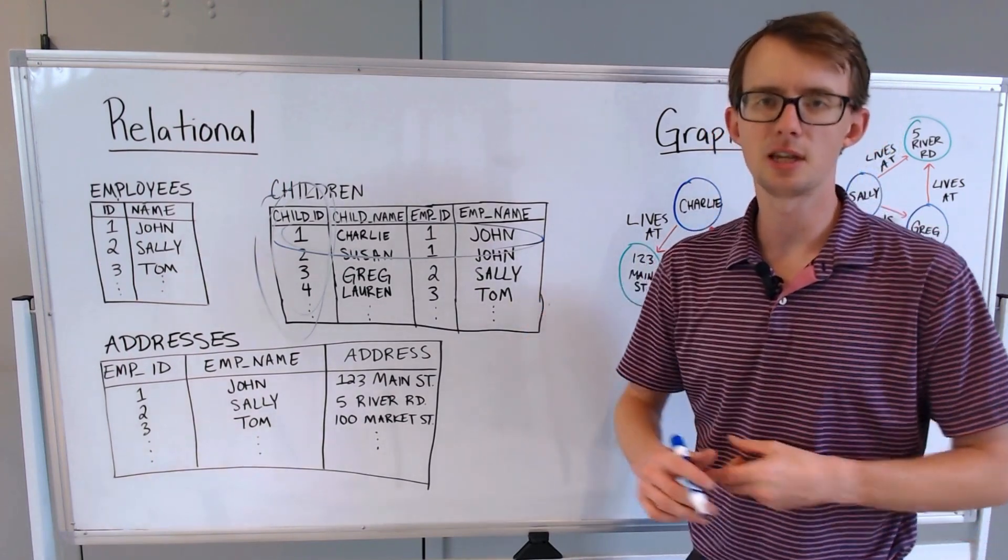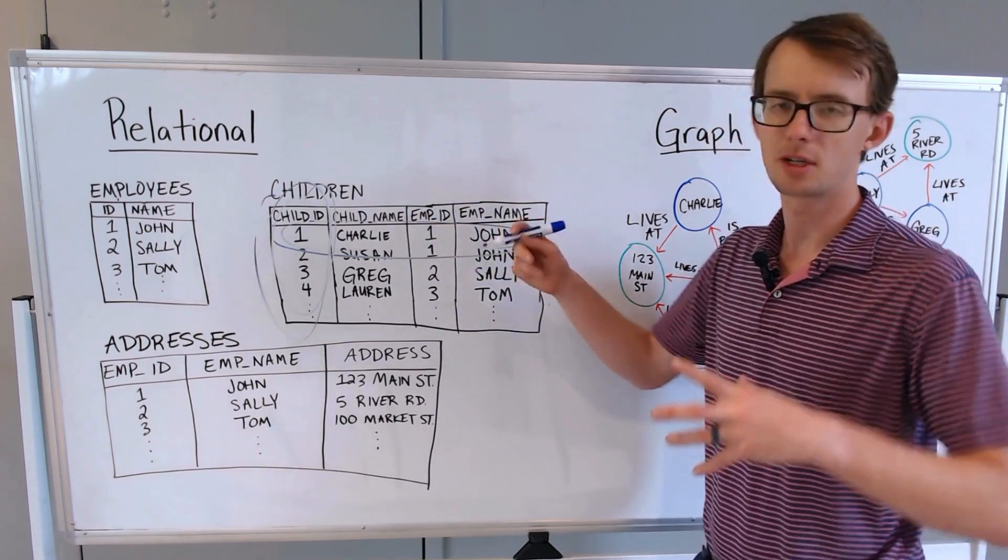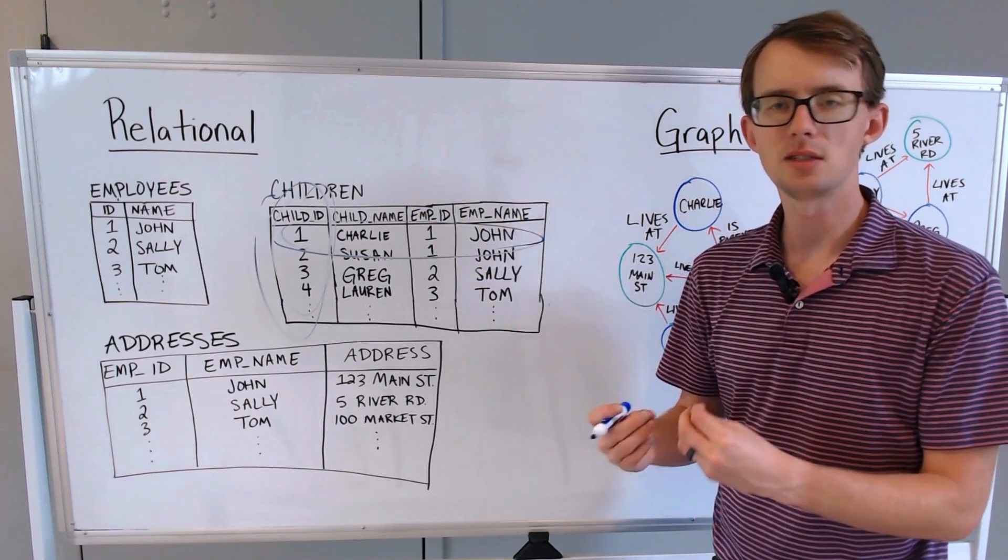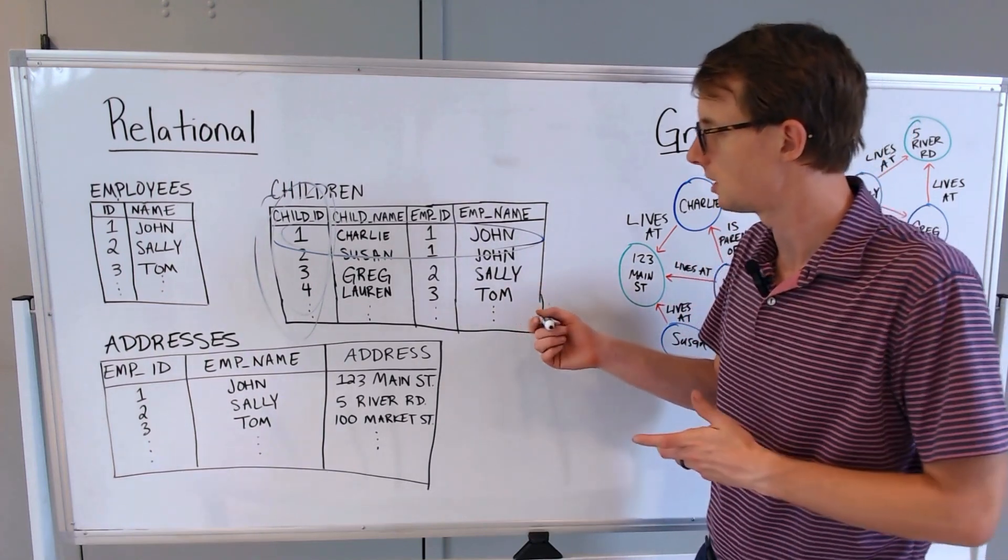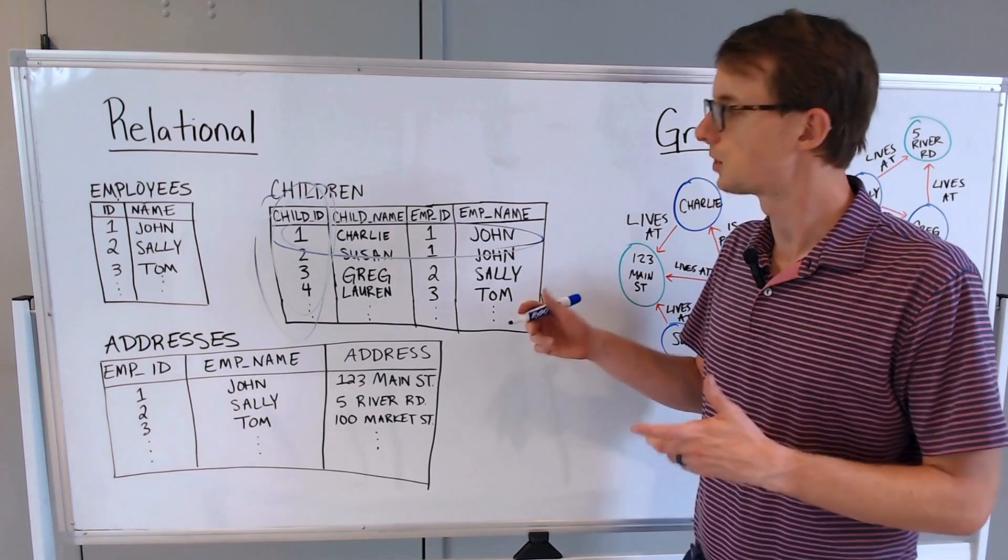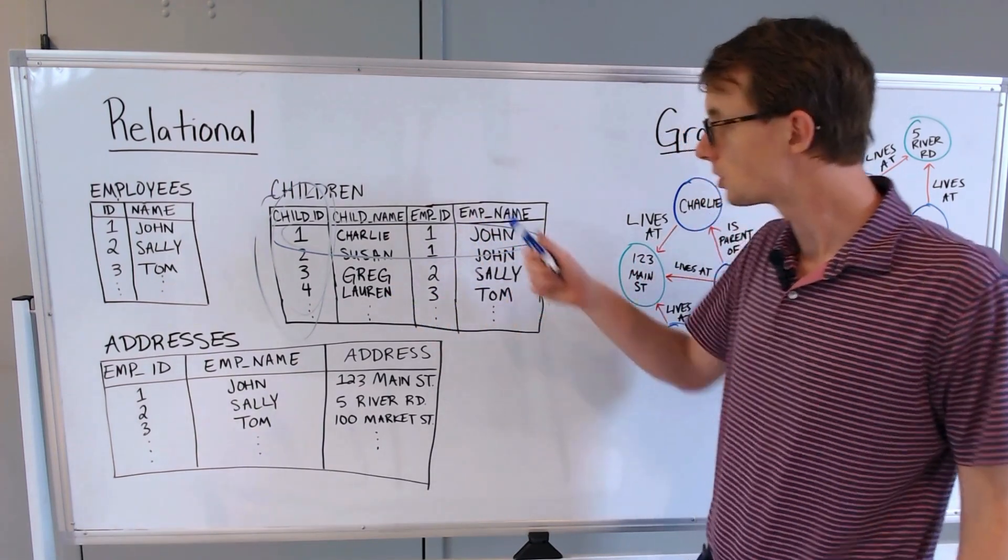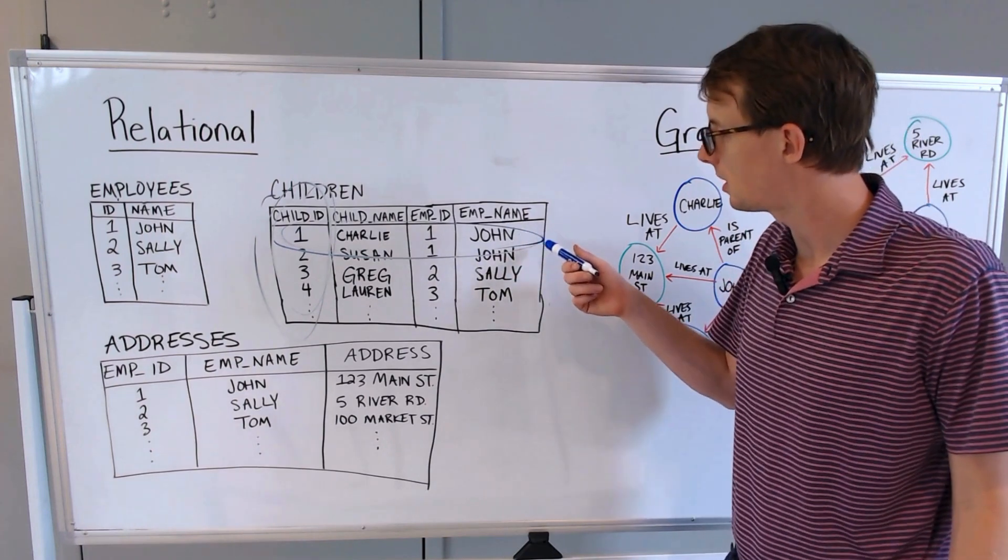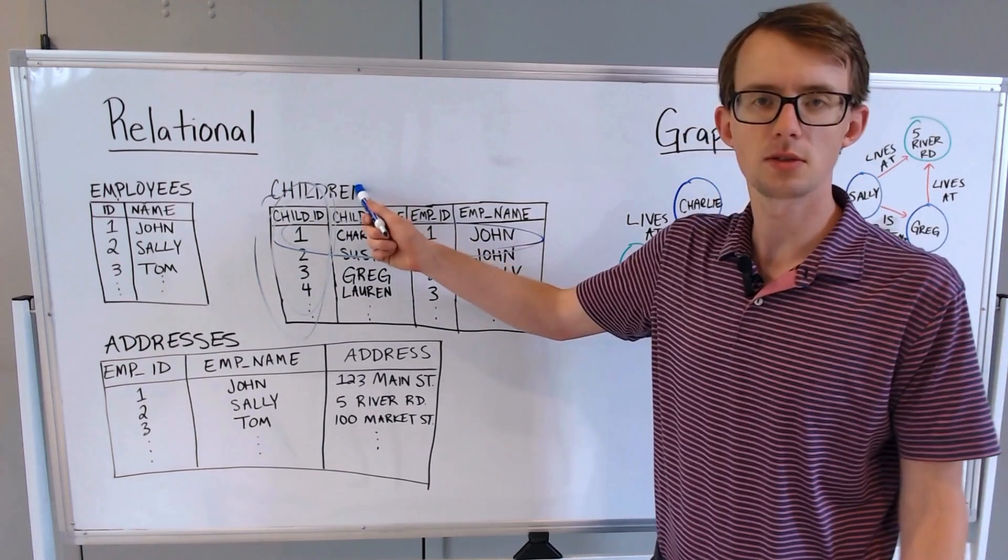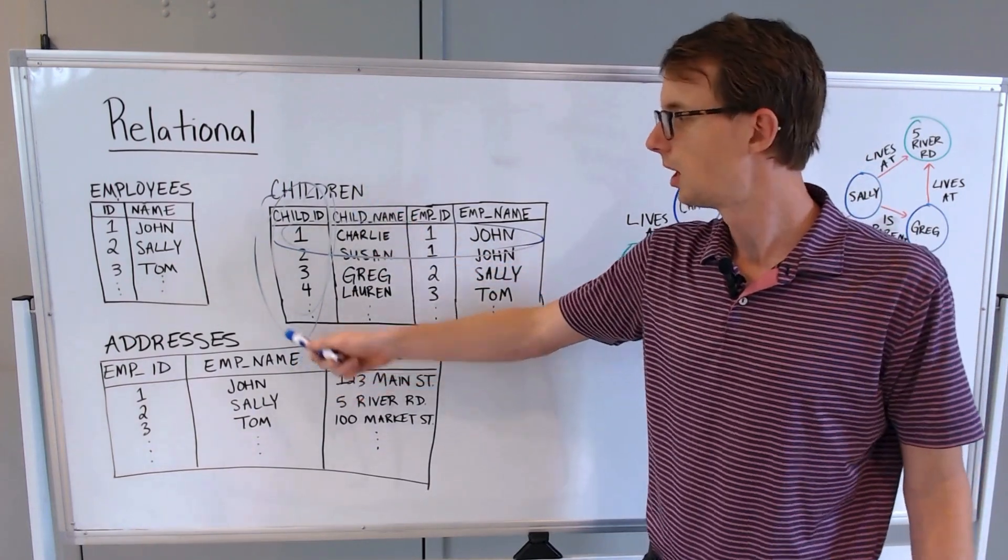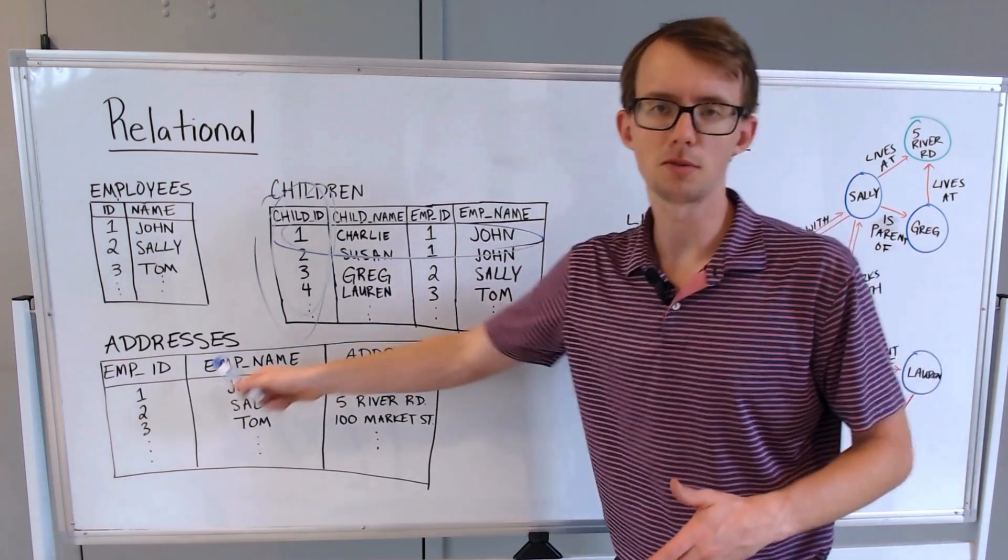We might have multiple tables that are all connected to one another through some kind of common key or similar feature. We might see these as Excel tables or SQL tables, and we can join information so that we can combine what we have in each of these tables to answer some simple questions. In this particular case, what address might the child of some employee live at? We'd have to join the children's table with the addresses table on some common feature like employee ID.